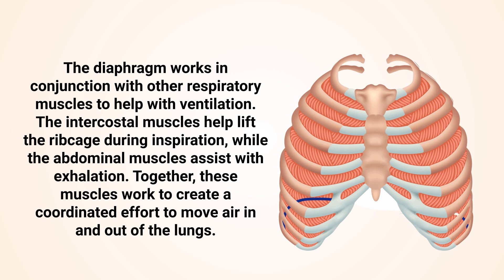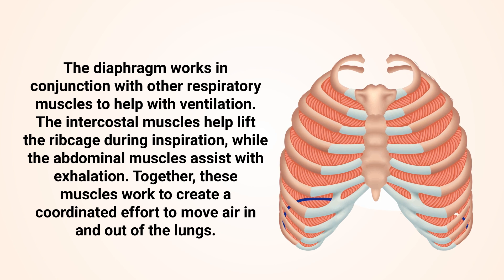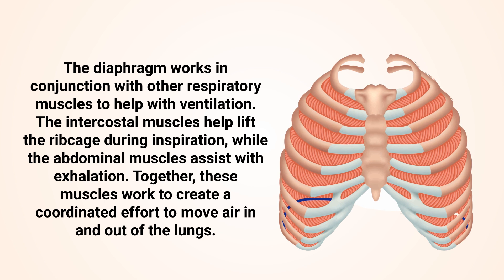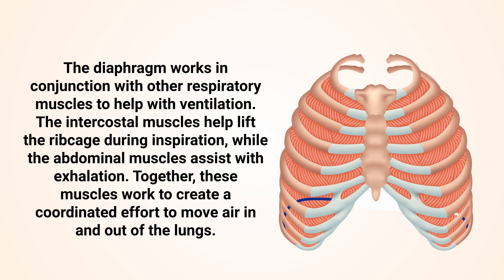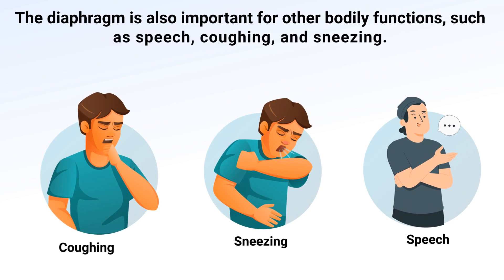The intercostal muscles help lift the rib cage during inspiration, while the abdominal muscles assist with exhalation. Together, these muscles work to create a coordinated effort to move air in and out of the lungs.